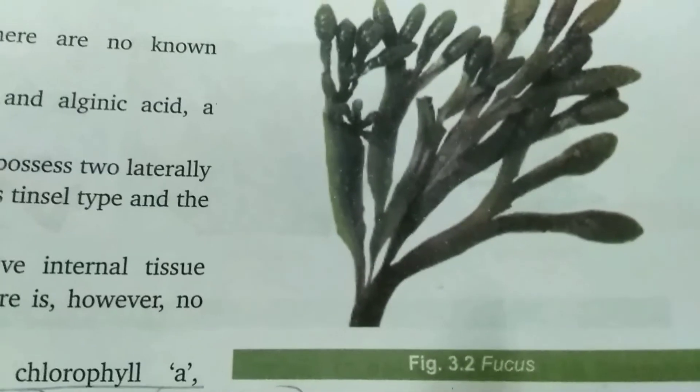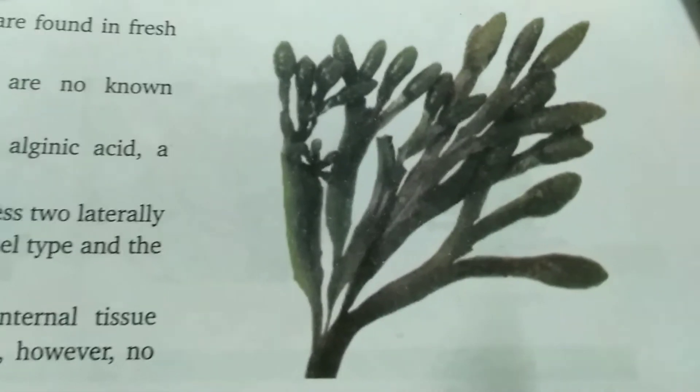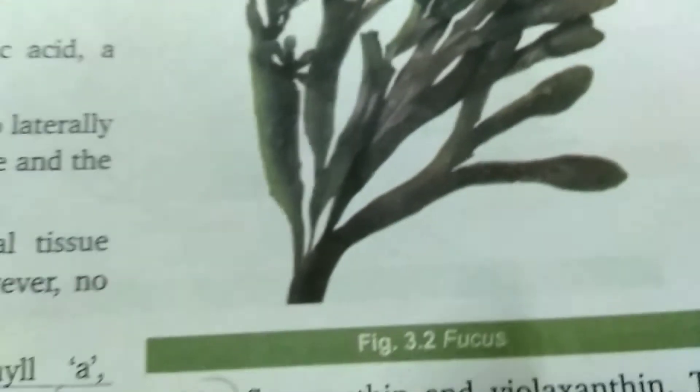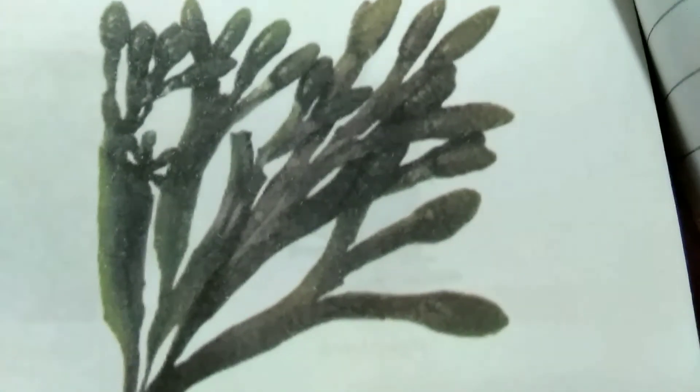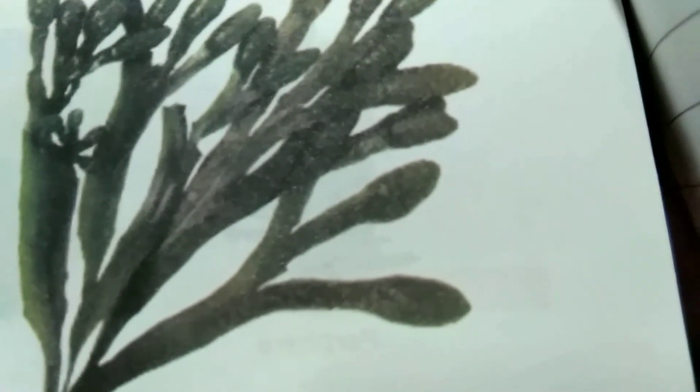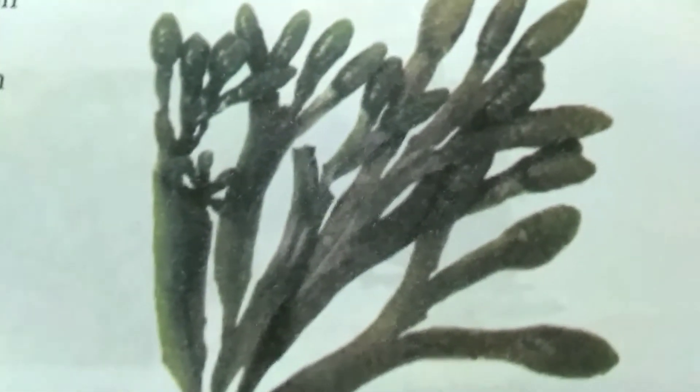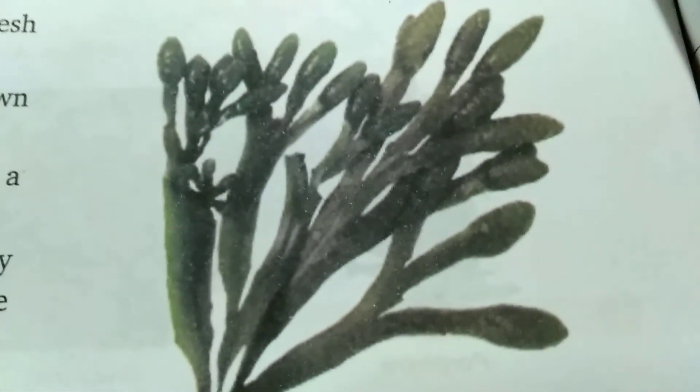Phaeophyta means brown algae. An example is Fucus — this is a structure of Fucus, you can easily understand. They are brown algae. Their photosynthetic pigment is chlorophyll A and C. Their reserve food is laminarin and mannitol; true starch is absent.